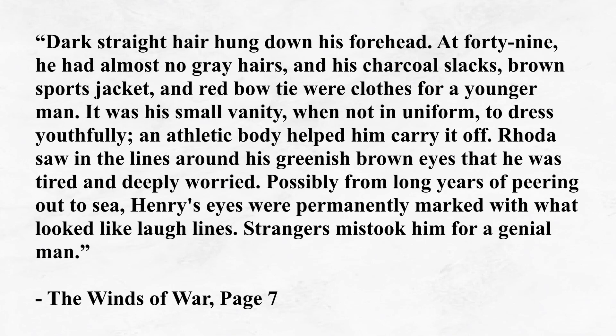Let's take a look at how he describes the character Victor Henry. 'Dark, straight hair hung down his forehead. At 49, he had almost no gray hairs, and his charcoal slacks, brown sports jacket, and red bow tie were clothes for a younger man. It was his small vanity, when not in uniform, to dress youthfully. An athletic body helped him carry it off. Rhoda saw in the lines around his greenish-brown eyes that he was tired and deeply worried. Possibly from long years of peering out to sea, Henry's eyes were permanently marked with what looked like laugh lines. Strangers mistook him for a genial man.'